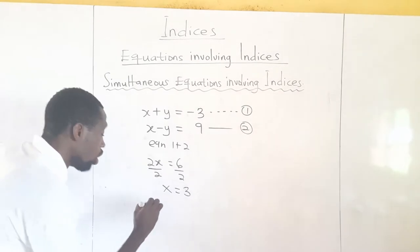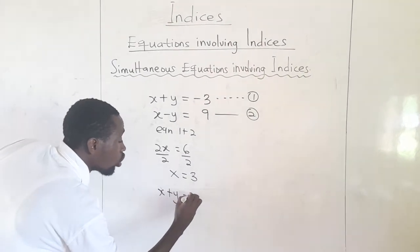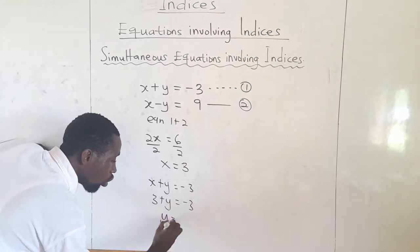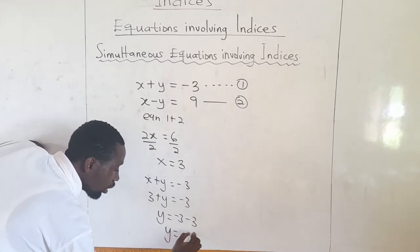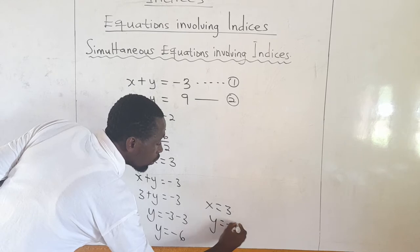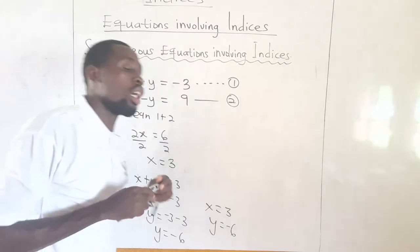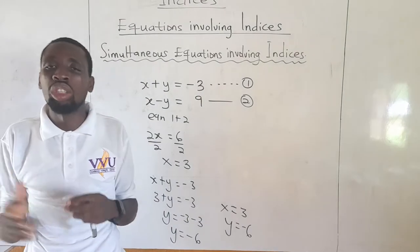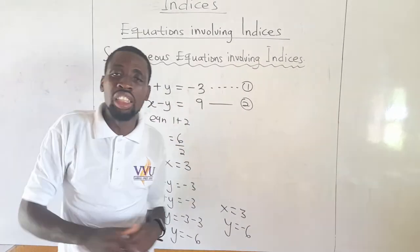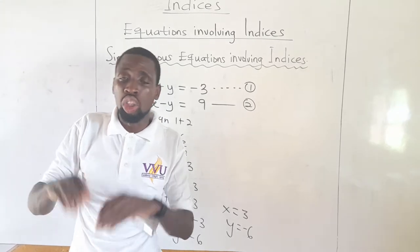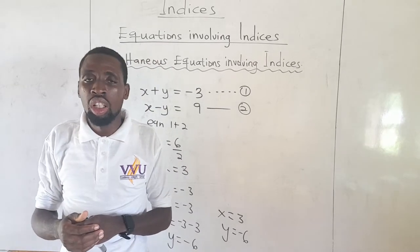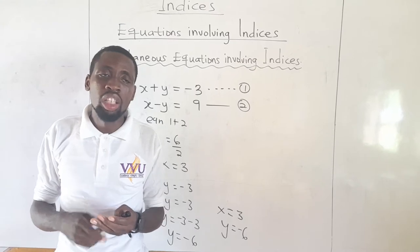Now I'll substitute x equal to 3 into equation 1 to get the value of y. So x plus y equals negative 3. In place of x I put 3: 3 plus y equals negative 3. So y will be equal to negative 3 minus 3, which gives y equal to negative 6. So our x is equal to 3 and y equal to negative 6. When indices are given to you to solve simultaneously, your task is to reduce the indices to become a simple linear simultaneous equation of this nature.